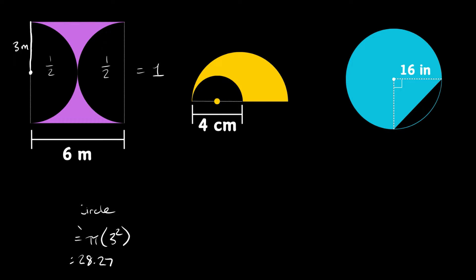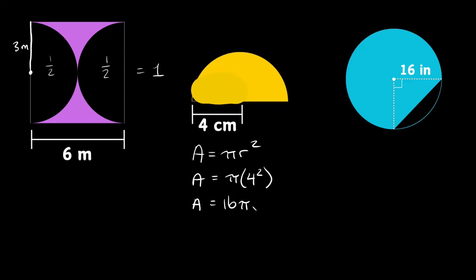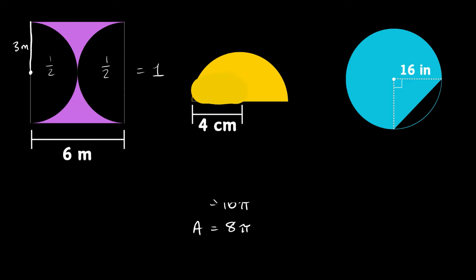Now let's jump to the next one. Here we have basically a semicircle with a smaller semicircle cut out on the left side. Again, find the total area first — just fill in the cut-out spot. The area of a full circle is pi r squared, and here the radius is 4 centimeters. So 4 squared is 16, giving an area of 16 pi. But we just have a semicircle, so half of 16 pi is 8 pi. That's the total area.